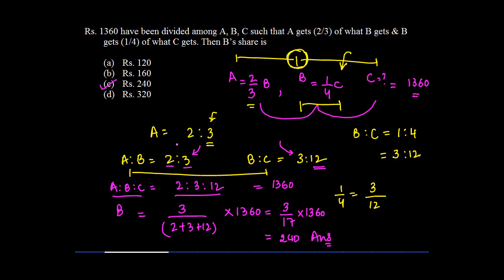So what I did in this question is that instead of maybe putting, I mean traditionally the way you might have been doing is, you put C equals to X, then B becomes 1/4 X, and A will become 2/3 of B or 1/4 X. And you would have solved this as equal to 1360. Once you get the value of X, you can easily find the value of B.